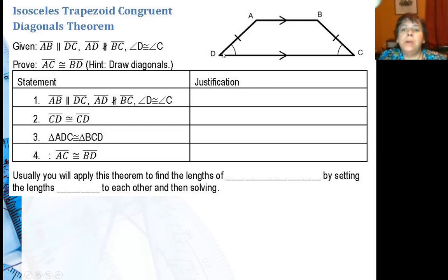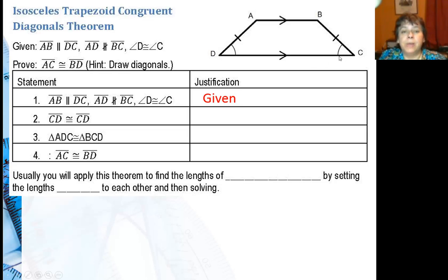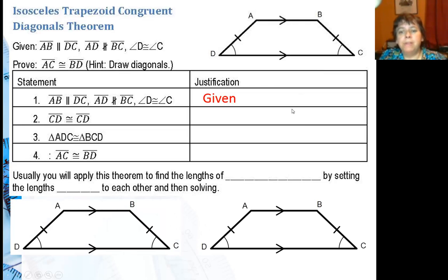And I want to prove that AC is congruent to BD. Go ahead and write down my given: my bases are parallel and my legs are not parallel. And it is isosceles by saying those two angles are congruent — so that's given. I'm going to make my life a little easier by putting the trapezoid down here twice, and you're going to see why.